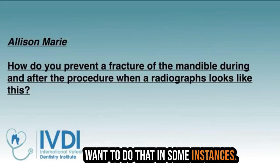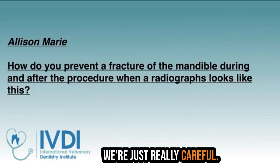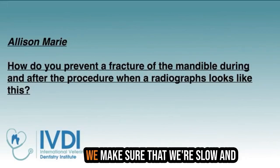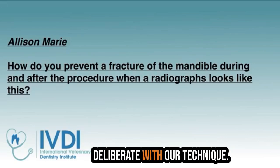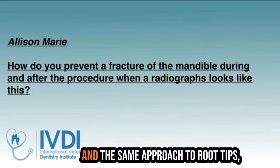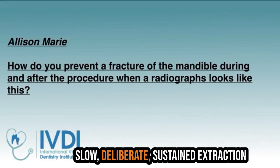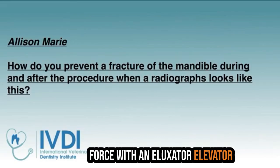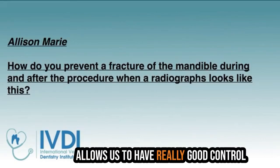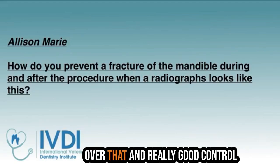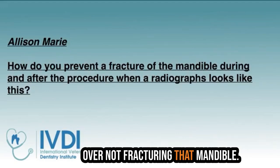But from that question, Allison — how do we prevent it? We're really careful when we put our torque pressure on that tooth root to remove it where we can't remove additional bone, where it's not feasible to remove additional bone because we may be compromising bone too far apically. We don't want to do that in some instances. We're just really careful. If we don't put a lot of torque on those, we make sure that we're slow and deliberate with our technique. Same approach to root tips — slow, deliberate, sustained extraction force with a luxator elevator allows us to have really good control and really good control over not fracturing that mandible.